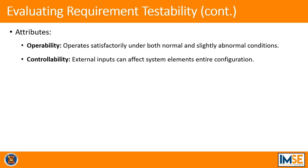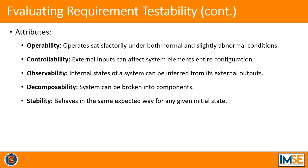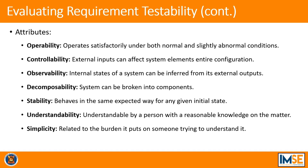As this evaluation can get tricky, certain attributes are recommended to be met. Operability is the ability to operate satisfactorily under both normal and slightly abnormal conditions, different from the design conditions. Controllability is the ability of an external user to affect system elements in its entire configuration space using only external inputs. Observability is a measure of how well the internal states of a system can be inferred by knowledge of its external outputs.